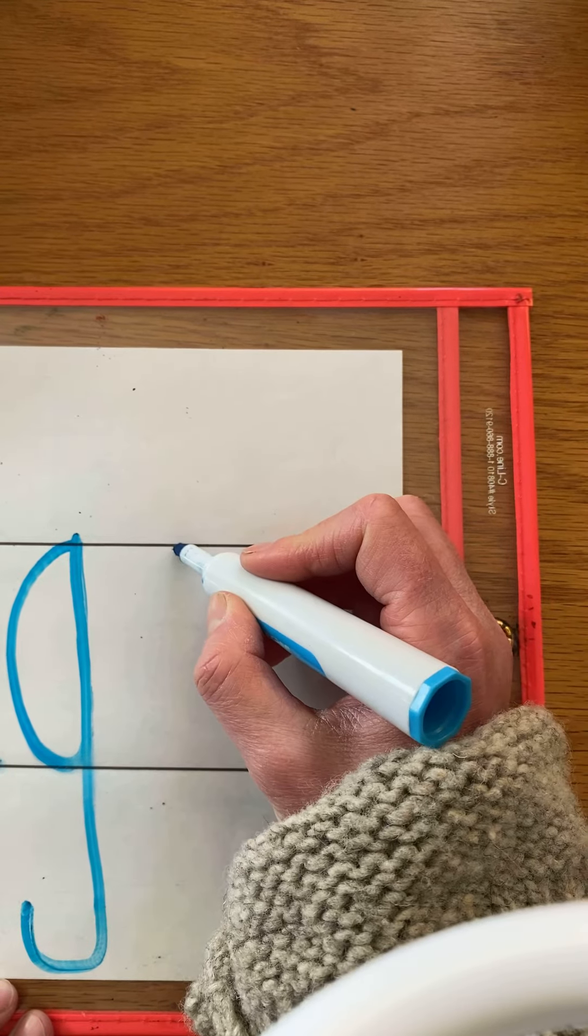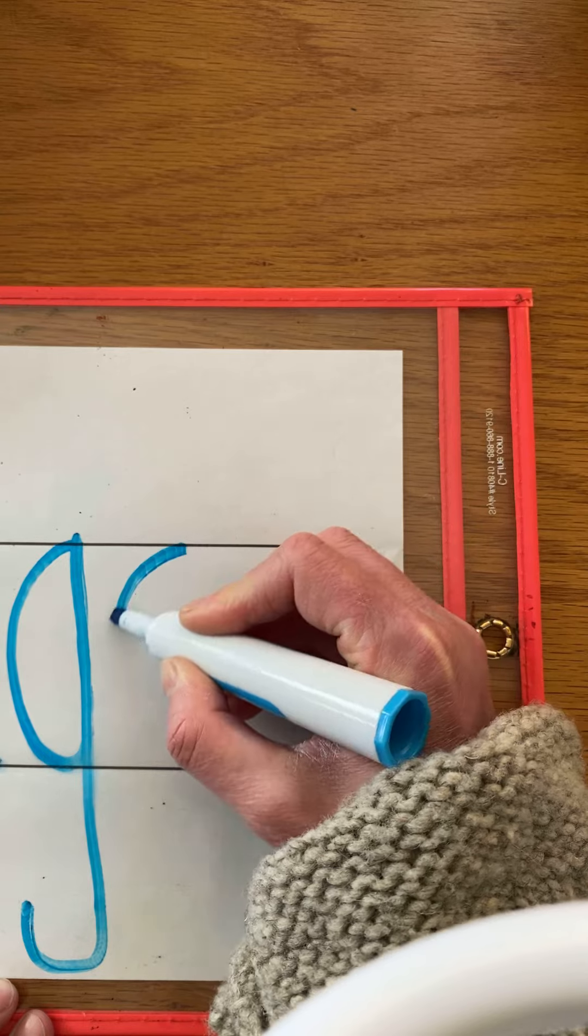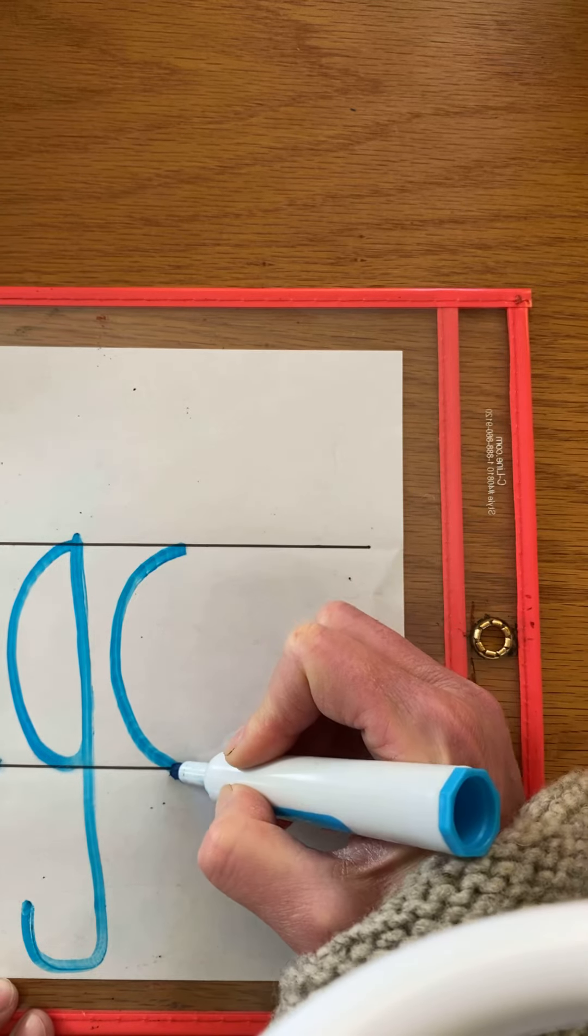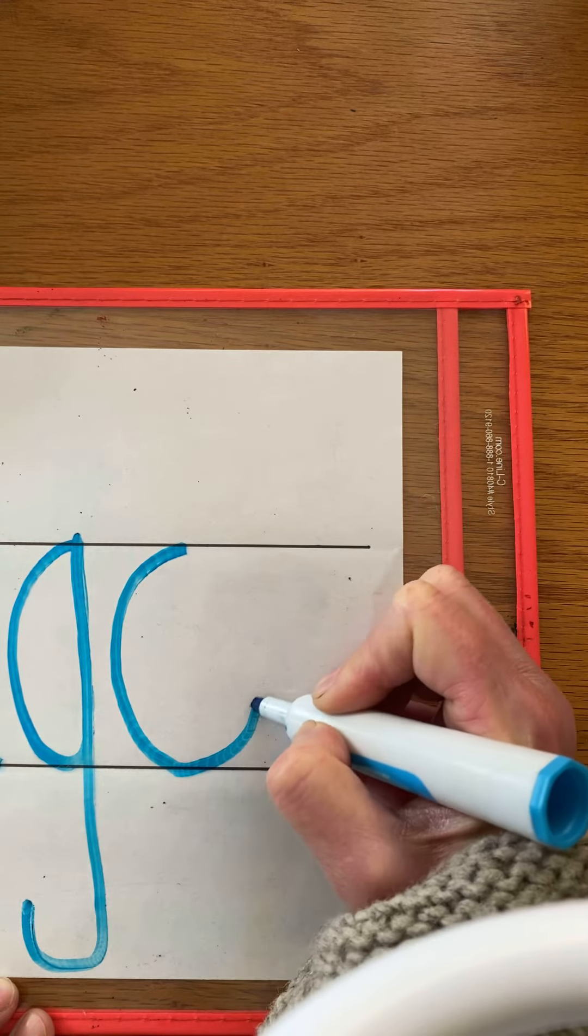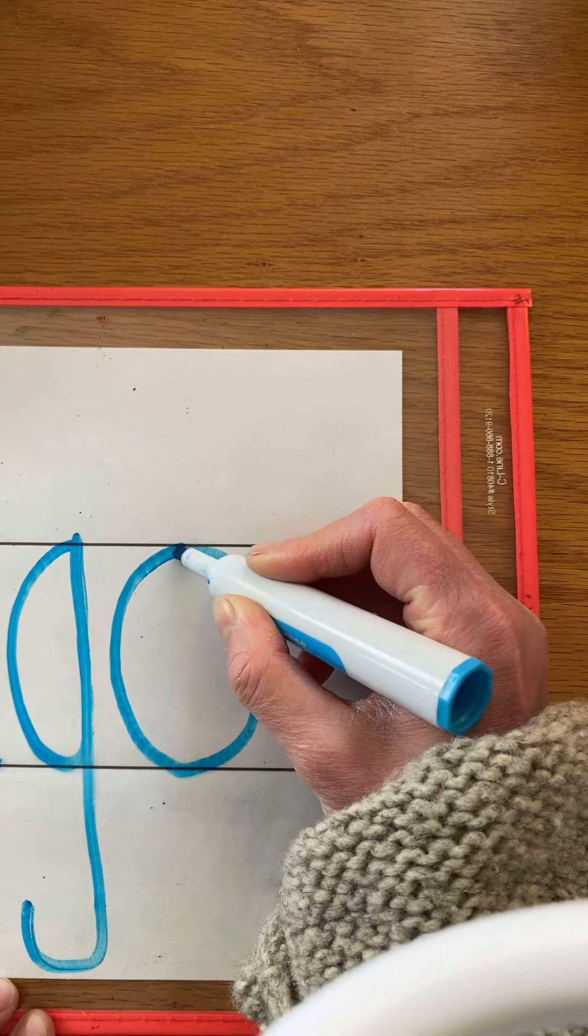Next we're gonna do the letter O. Again we're gonna start with a magic C and then we're just gonna keep going around until we touch the top.